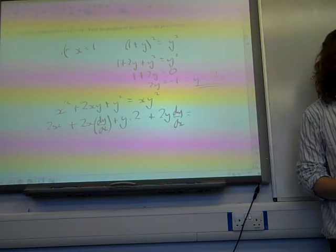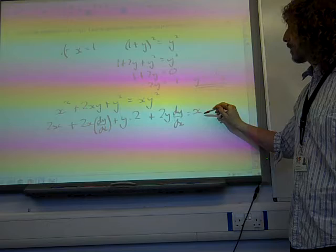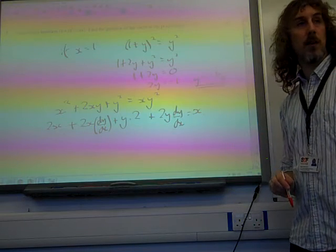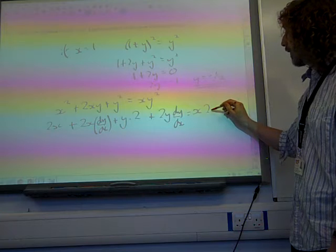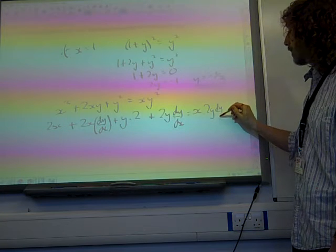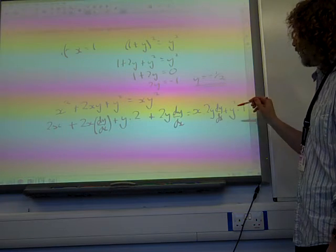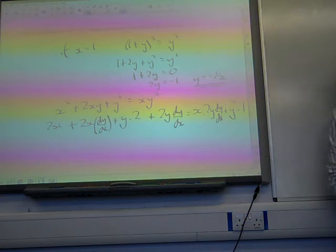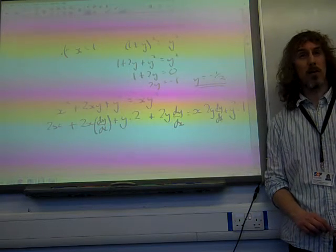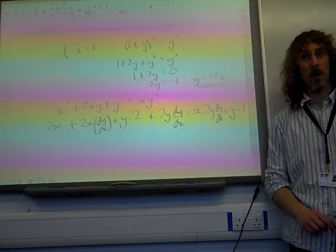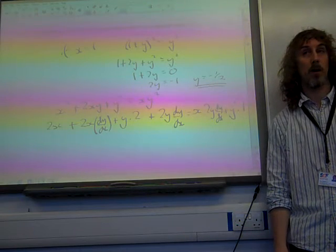If I move on to the right-hand side, I've got a product to work with here. It's the first times the derivative of the second. Now if I differentiate y squared, that's 2y dy by dx. Plus the second thing times the derivative of the first, which is 1. And that was a lot of work. But if we've got all of that right, I think they gave 4 marks for that line. For having all of that there. Because it was a lot of work.